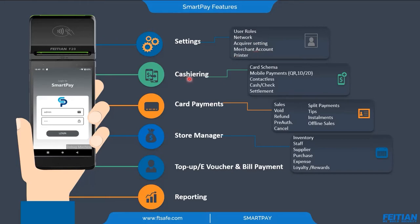In cashiering, we have the card schemes, mobile payment, contactless, cash and check, and settlement. In card payments, we have multiple types like sales, void, refund, pre-auth, cancel, split payment, tips, installment, and offline sales.